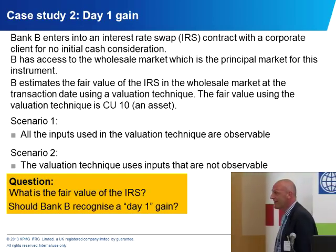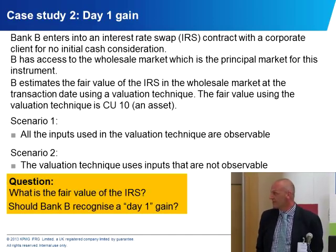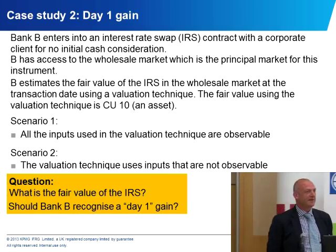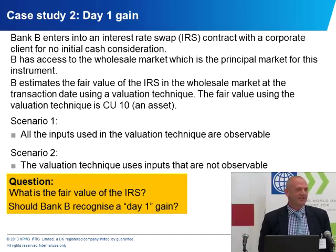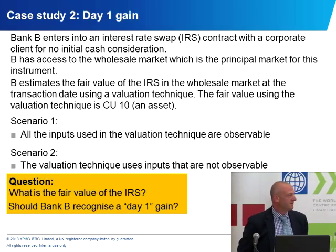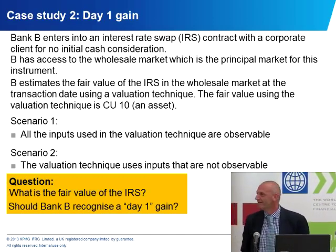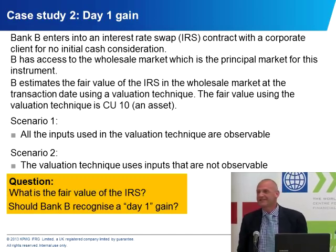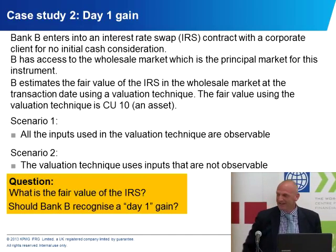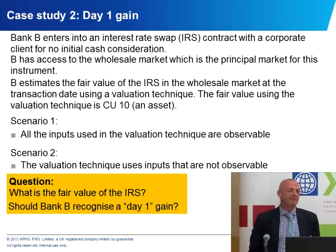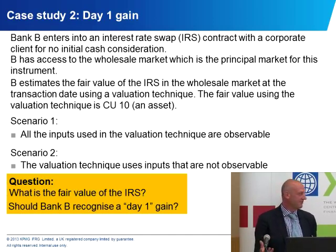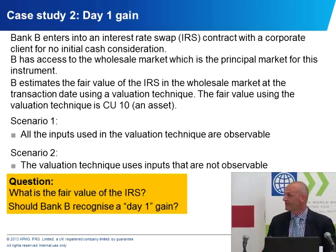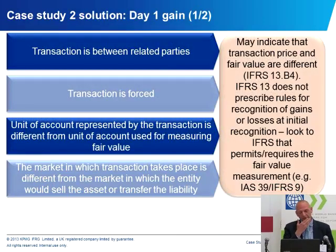There are two main questions: what is the fair value of the swap from the perspective of B, and should B recognise a day one gain? In scenario one, all inputs used in the valuation technique are observable. B transacted at transaction price zero, but observable data suggests the swap has a value of plus 10. The fair value would be 10 — although B transacted in the retail market, it would identify the wholesale market as the principal market, giving a robust valuation of 10. So does it book a gain of 10?